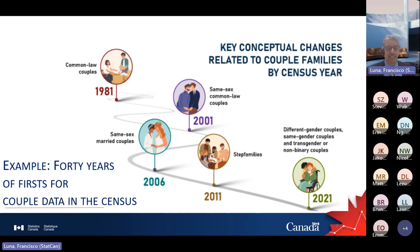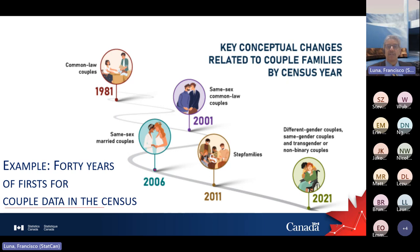In 2004, same-sex marriage became legal in Canada, so in 2006 we began to collect information about same-sex married couples. Then in 2011, we put a wider umbrella to collect information about step-families. And finally, in this census, we also collect how the gender issue relates to the formation and concepts regarding families, sex, and gender.